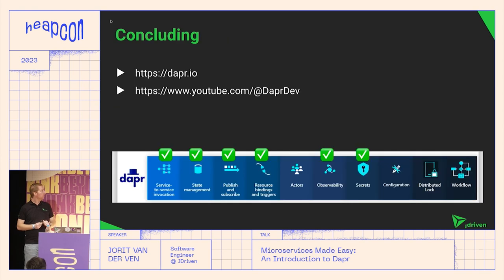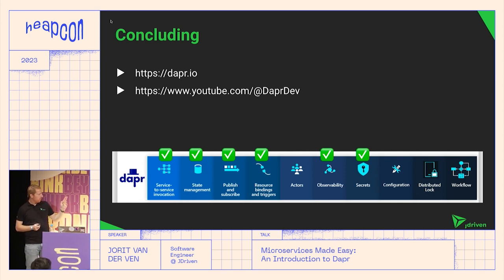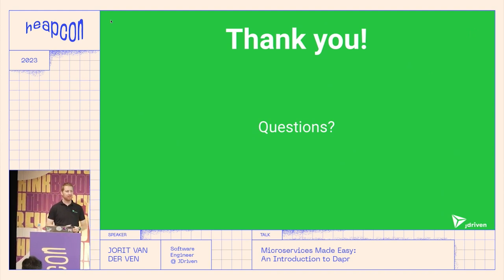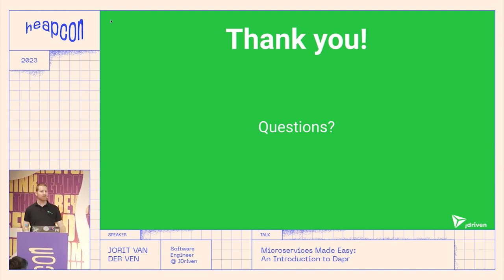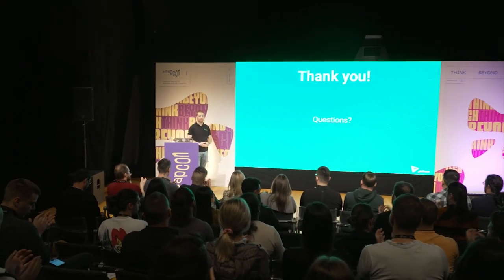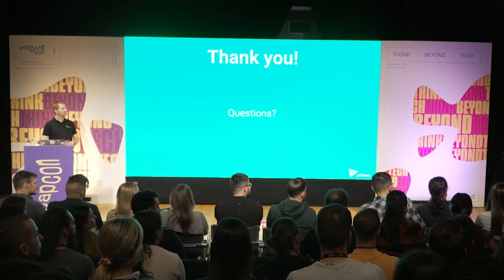In conclusion: if you want to learn more, take a look at the Dapr website or their YouTube channel — they have lots of tutorials and really good, easy-to-start documentation. We covered some of the building blocks; there are many more. If you're at a startup where time to market is important, look at Dapr. If you have a polyglot microservice landscape, look at Dapr. If you have service invocation without circuit breakers that's causing problems, you can change the URLs to Dapr sidecar URLs and get all that functionality for free without changing your code. Thank you.